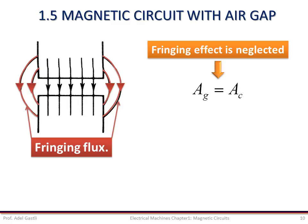Now, if this fringing effect is neglected, the cross-sectional areas of the core and the air gap are the same. And therefore, the flux densities in the core and the air gap are equal.